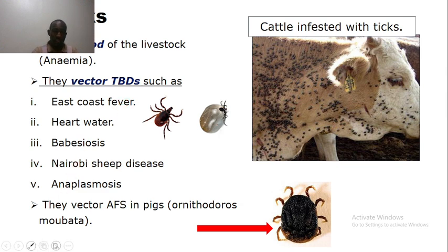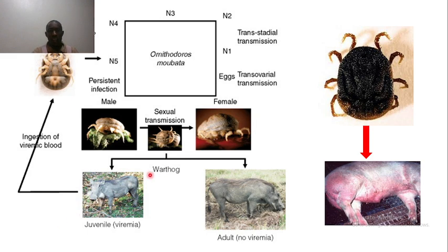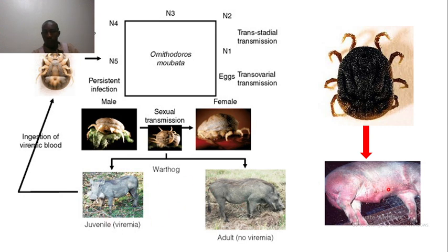We have also the soft tick Ornithodoros, which vectors African Swine Fever. Here is the life cycle of African Swine Fever — the tick Ornithodoros transports the disease from wild pigs to domestic pigs, resulting in African Swine Fever. African Swine Fever has no successful treatment and no vaccine yet. These external parasites cause serious losses to farmers within Uganda.